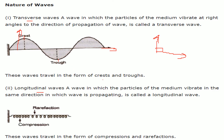Longitudinal waves are waves in which the particles of the medium vibrate in the same direction as the wave travels or propagates. As seen with a spring, the coils are very close together forming compressions, and far apart forming rarefactions. So longitudinal waves travel in the form of compressions and rarefactions, while transverse waves travel in the form of crests and troughs.